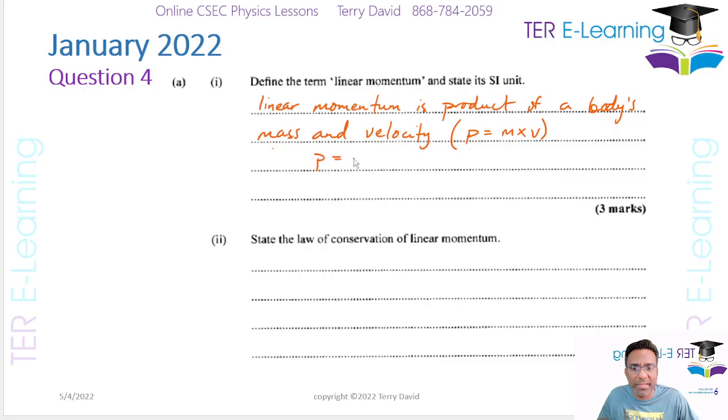Now if P is equal to M multiplied by V, in terms of units, mass is measured in kilograms and velocity is measured in meters per second. So the SI unit that they want here is going to be kg ms to the minus 1. That's my SI unit for linear momentum.